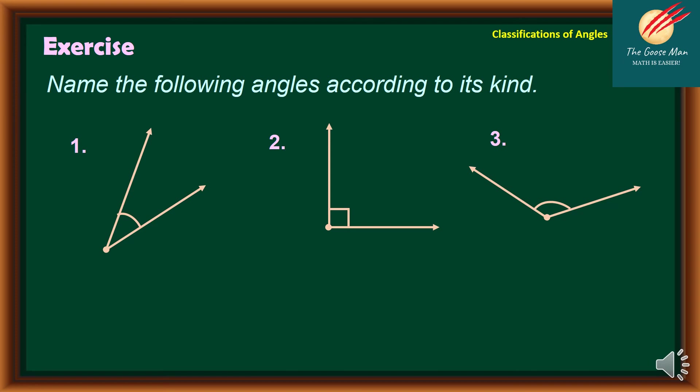Let's apply what we have learned on classification of angles. Name the following angles according to its kind. In number one, it's less than 90 degrees, so therefore we can have here an acute angle.